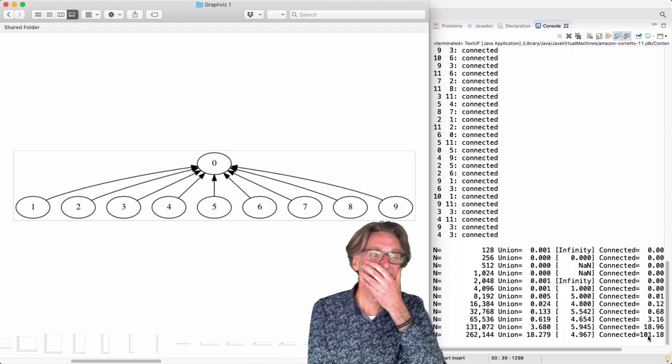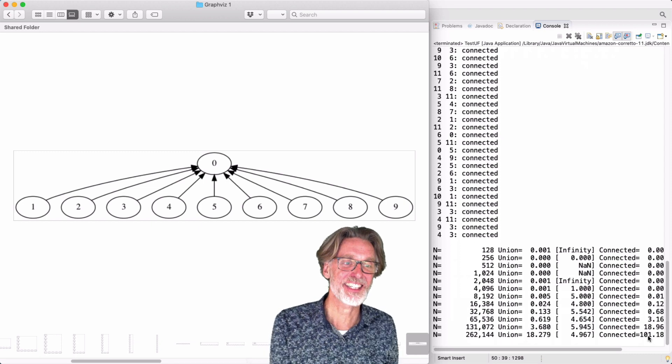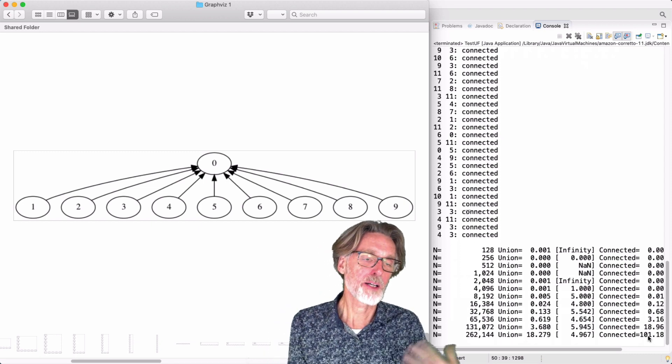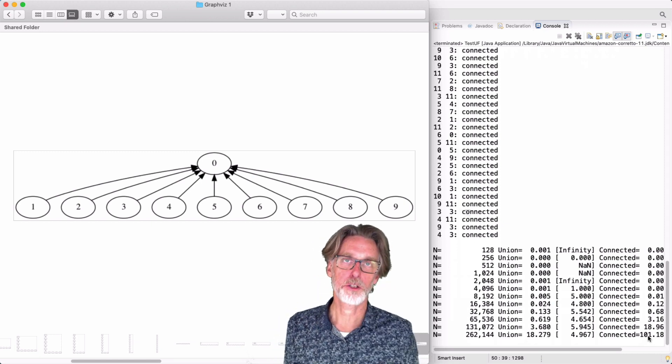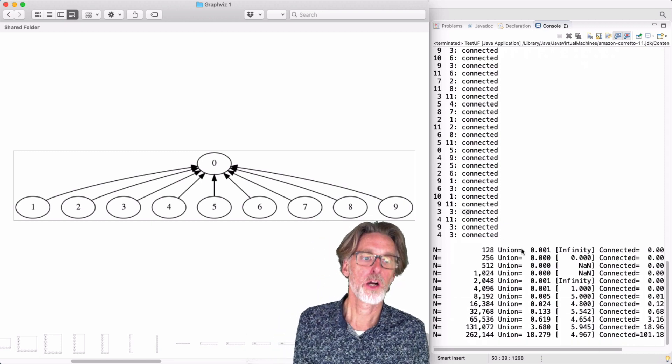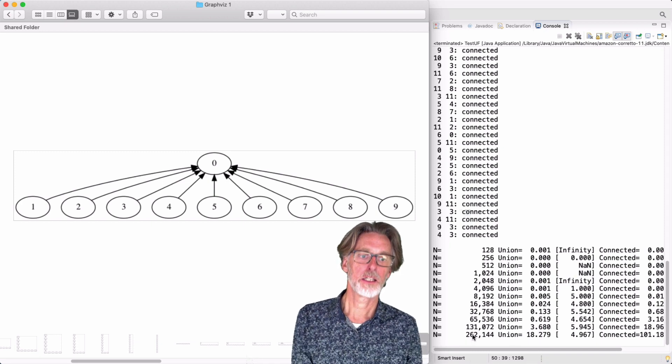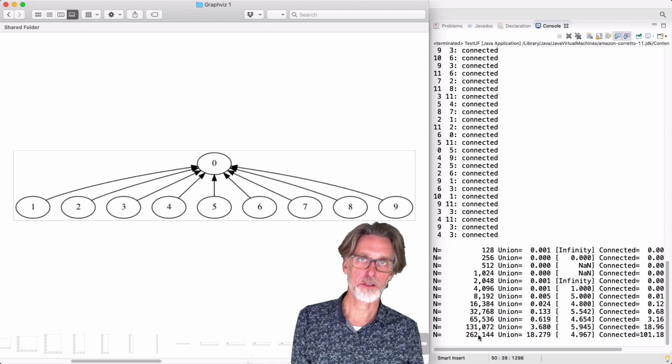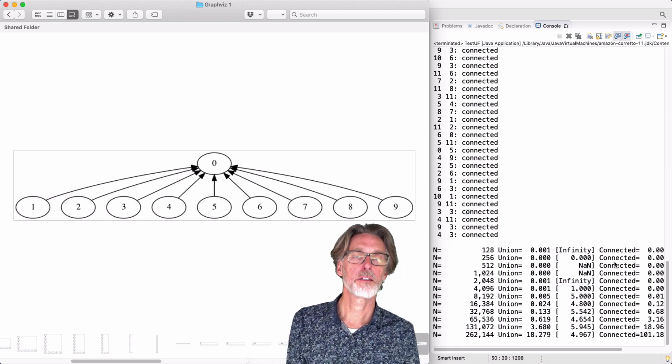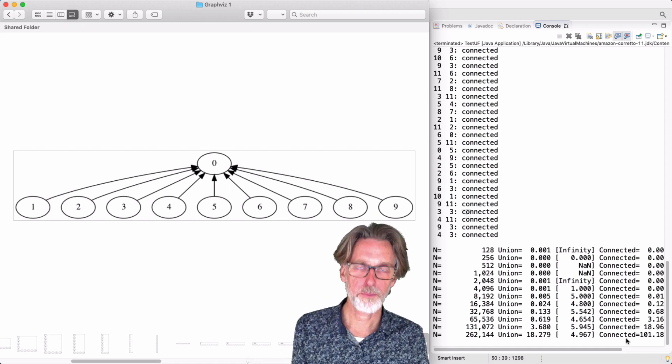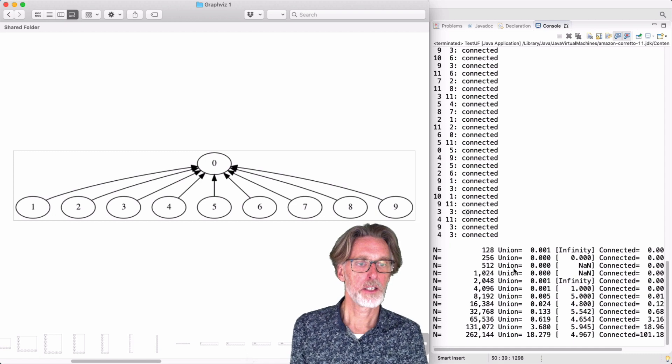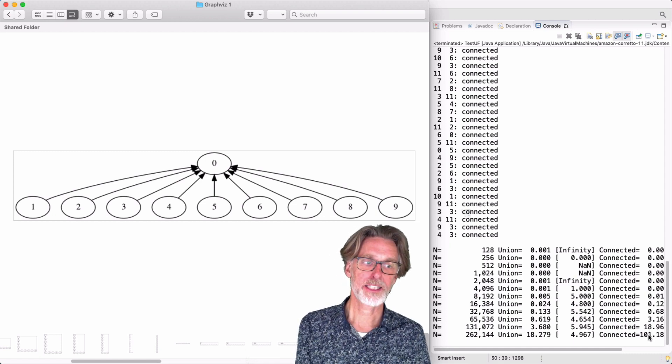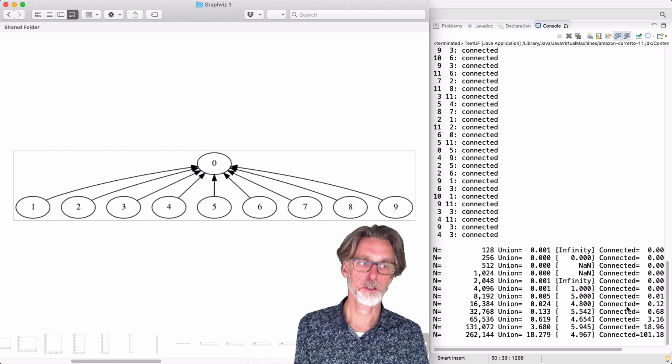But look at connected. We're having some terrible, terrible, terrible times here. What I'm using here, by the way, is random data. So these are randomly chosen indices. We are randomly unioning 262,000 things and then doing 262 random queries on whether or not things are connected. And union is not so bad, but connectivity is just a horror show.